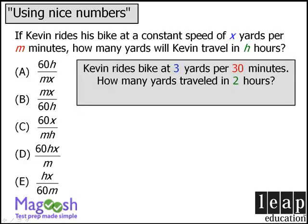So, for our question, let's say that Kevin can ride his bike at a speed of 3 yards per 30 minutes, and we want to know how many yards he can travel in 2 hours.